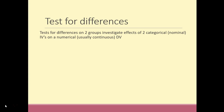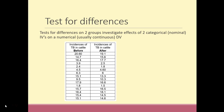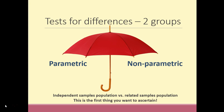Today we're going to be talking about tests for differences on two groups. These investigate the effects of two categorical or nominal independent variables on a numerical, usually continuous, dependent variable. A typical dataset might look something like this: our dependent variable is incidences of TB in cattle — specifically the percentage of incidences — and our independent variable is the categories before and after some sort of treatment.